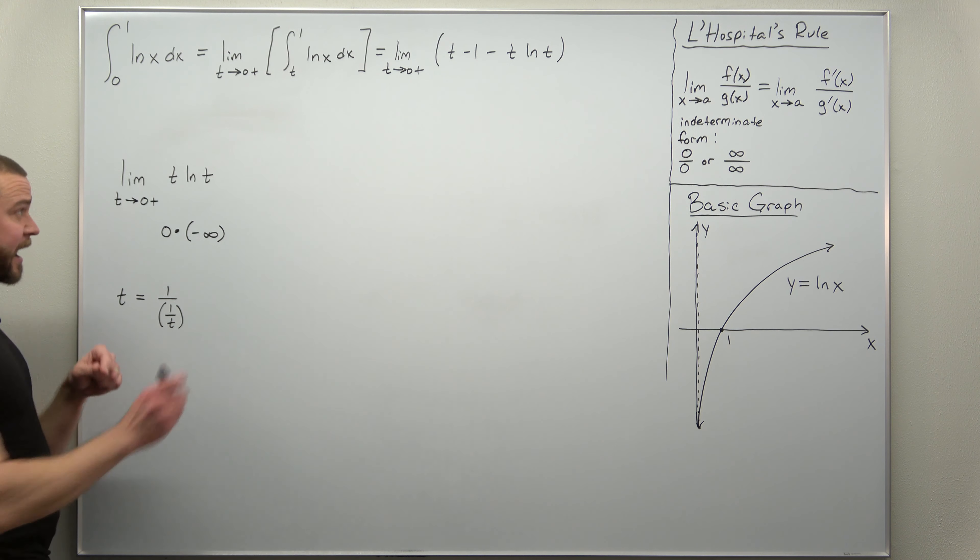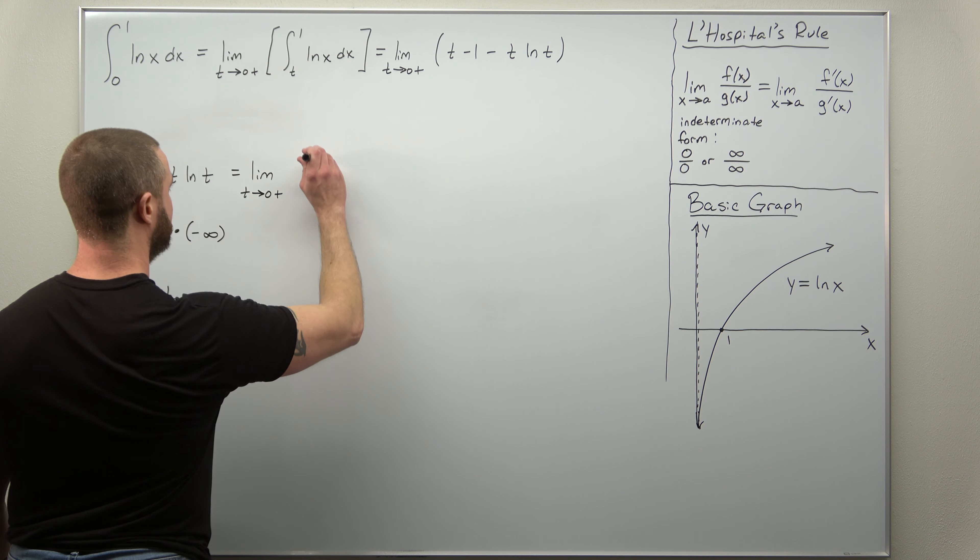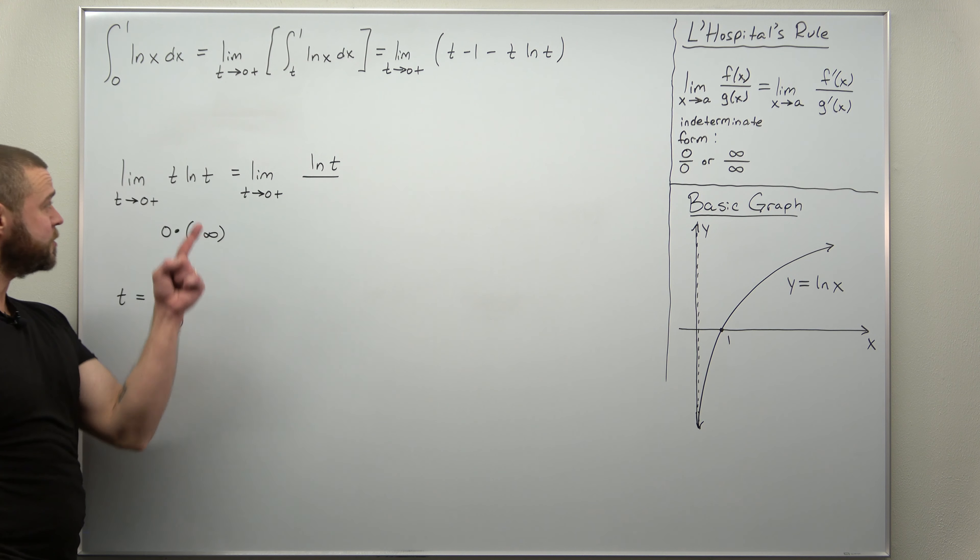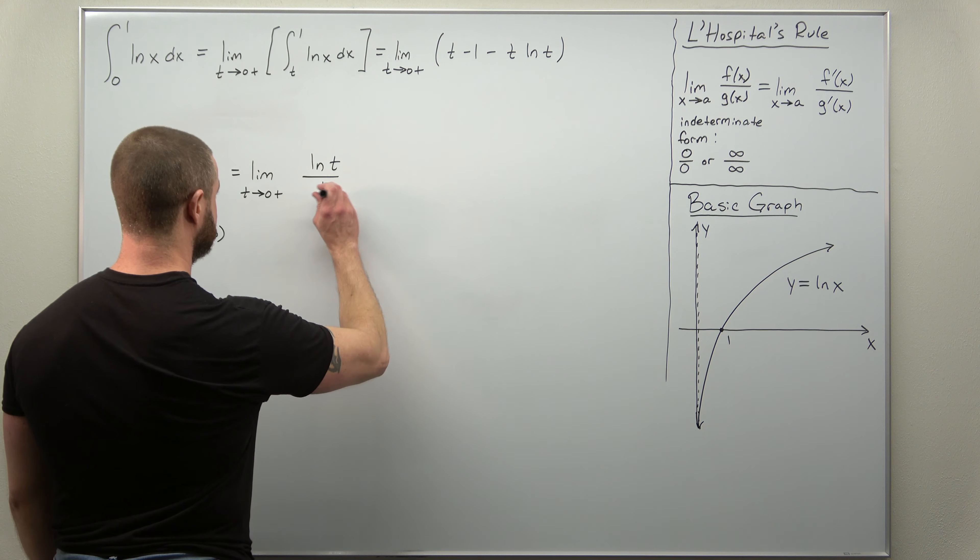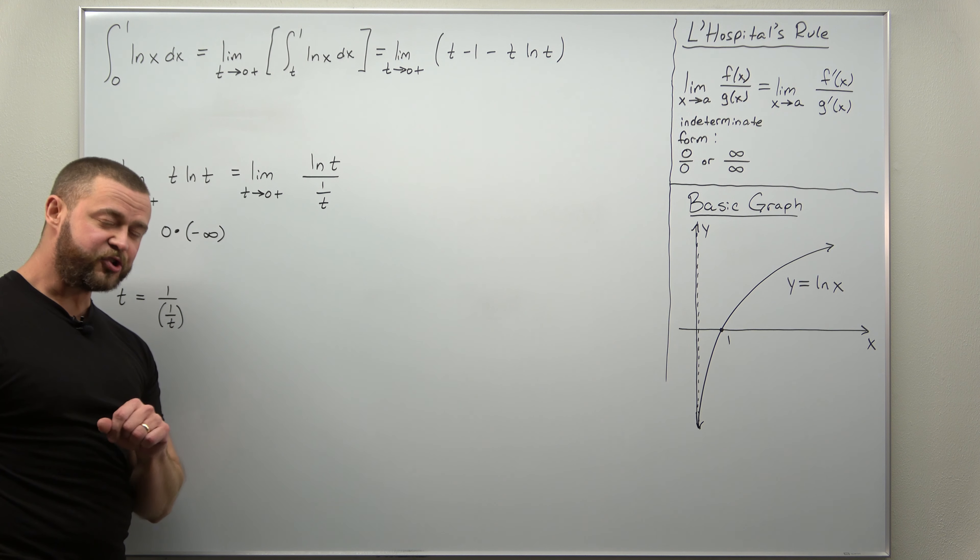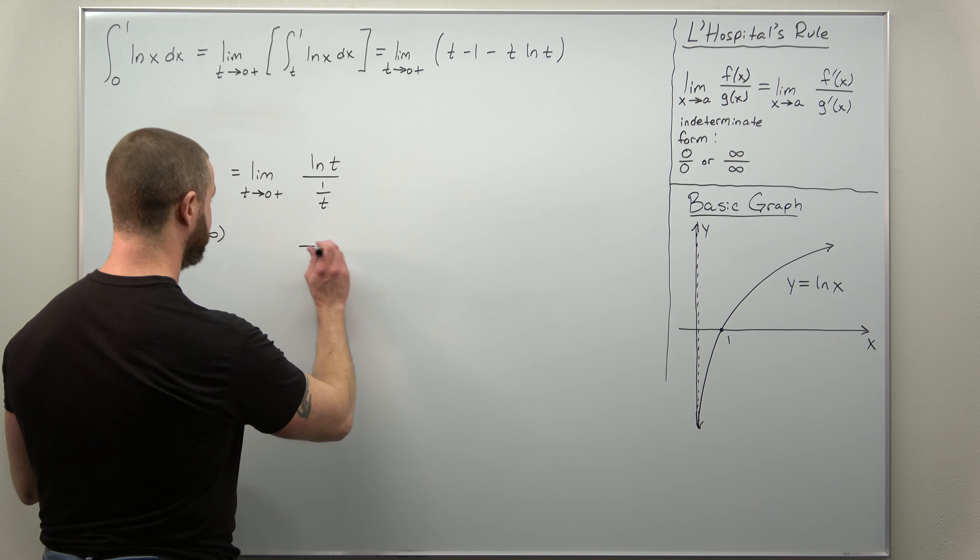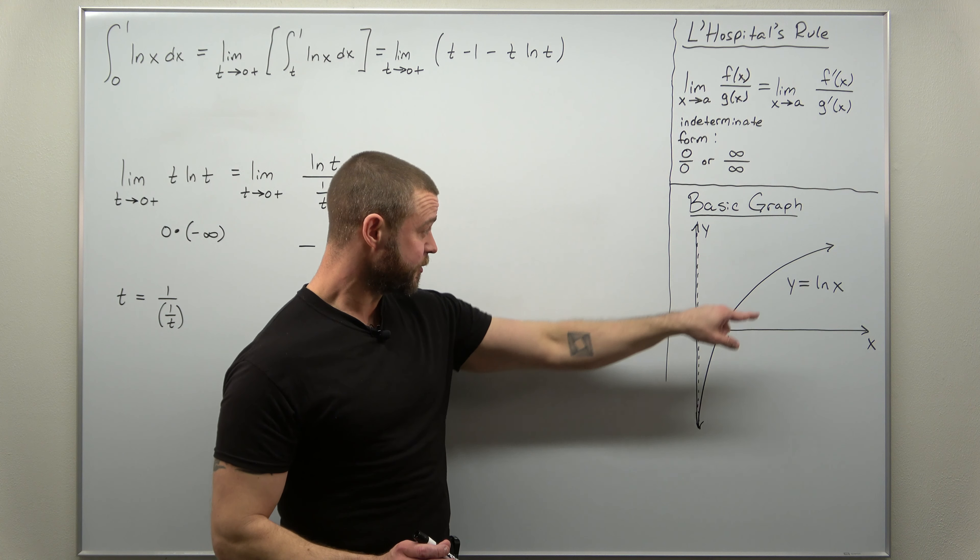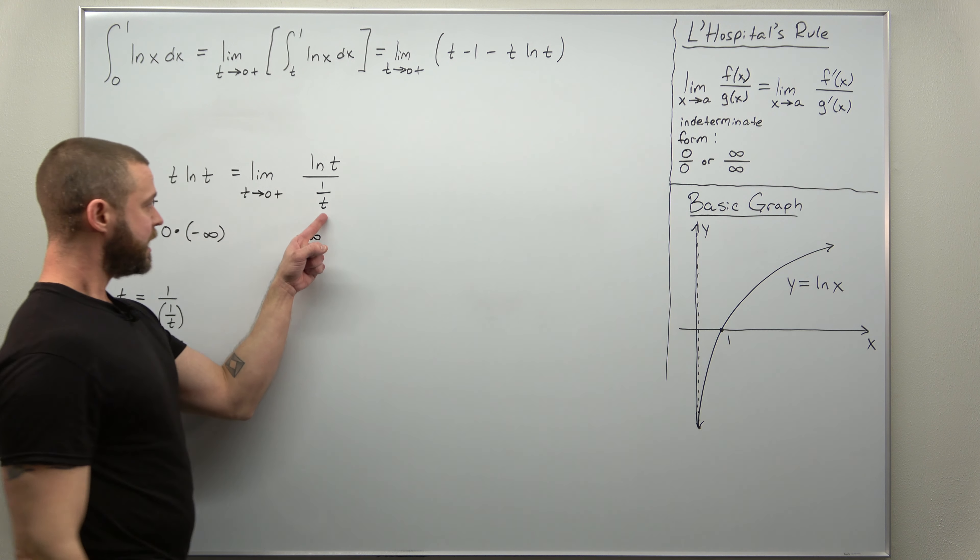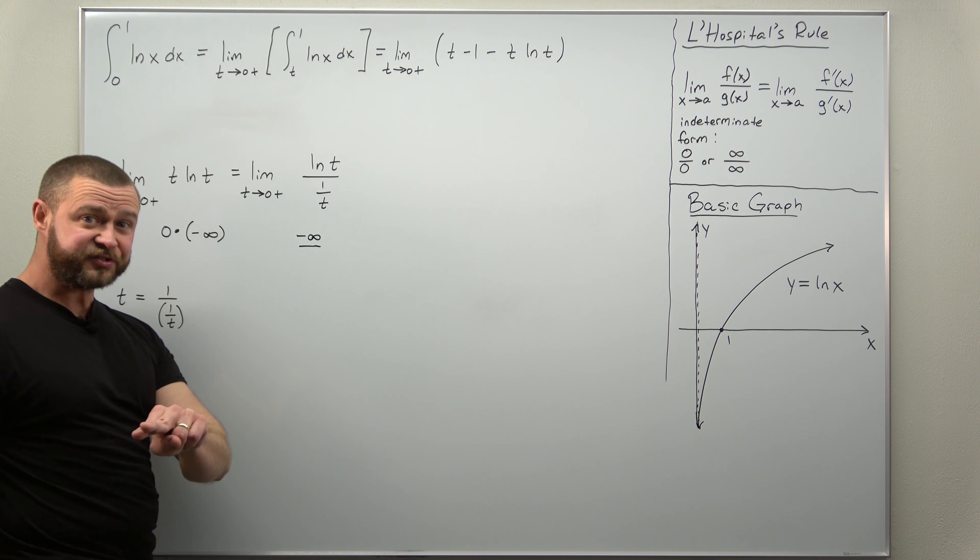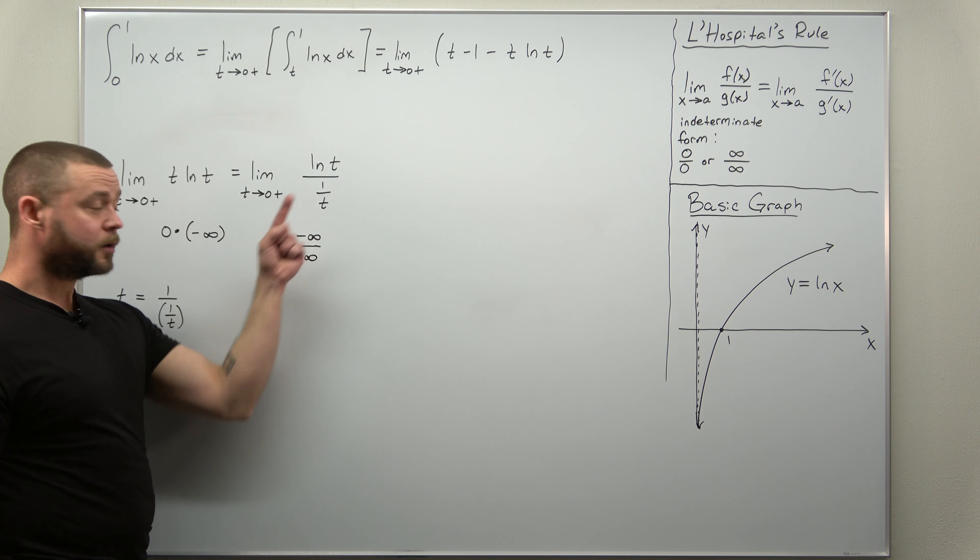So we're going to sneak a fraction into here. We have a limit still as t approaches 0 from the right. We're going to have natural log of t in the numerator, and t, we're going to rewrite it in the denominator as 1 over t. Now, if we check what type of indeterminate form we have, let t approach 0 for the numerator. Natural log of t, as you let t approach 0 from the right, that's going to approach negative infinity. And 1 over t, your denominator's getting very small. 1 over a small number is big. So your denominator here also approaches infinity.